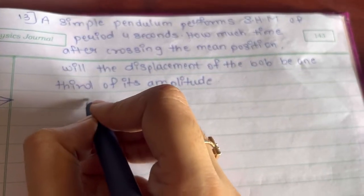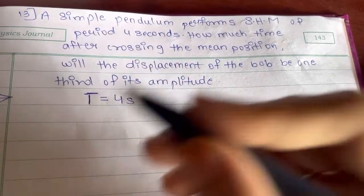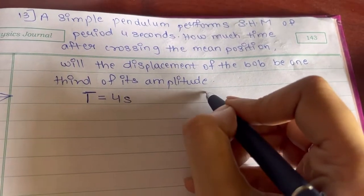So here we have time period 4 seconds. How much time after crossing the mean position? How much time?